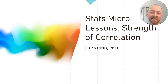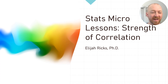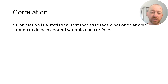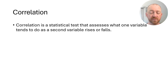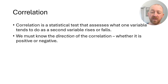Hi everybody, welcome back. Last time we talked about the direction of a correlation and how to understand that. Today we're going to talk about the strength of the correlation and how to understand that. A correlation is a statistical test that assesses for patterns between two variables — specifically, first the direction of a relationship: as one variable goes up in value, what does the other variable tend to do?